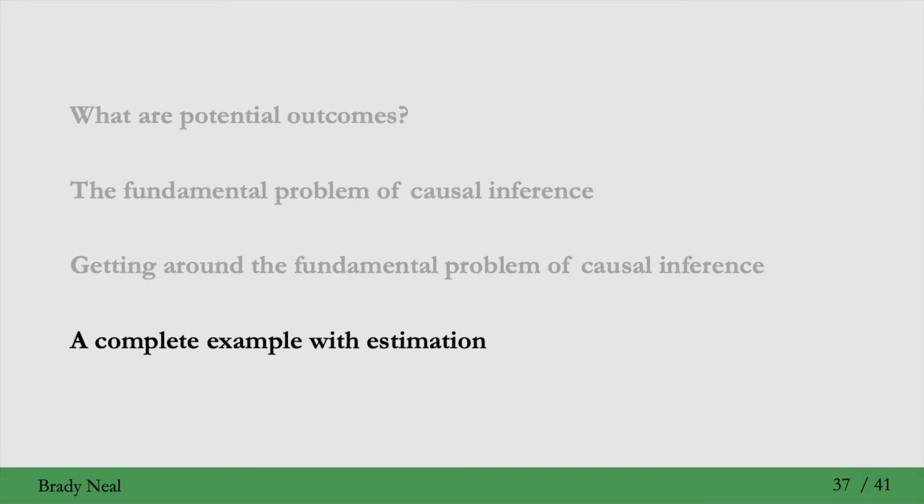Great, so we've shown how to identify the causal effect, but how do we actually estimate specific numbers? How do we get 5 or 10, whatever the true average treatment effect is, how do we get that specific number? And that's what we'll do now in a complete example.